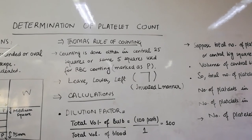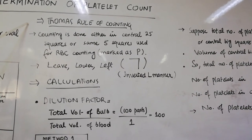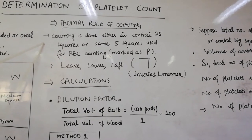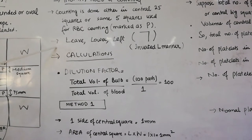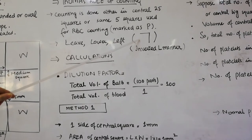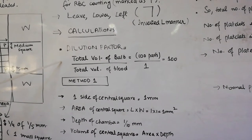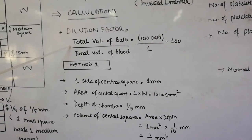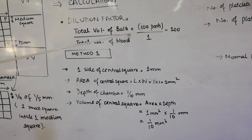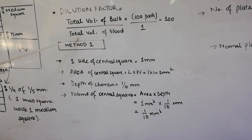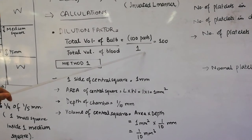Now we will discuss the rule of counting for platelet count. The Thomas rule of counting is also used here — you count the platelets in either the central 25 squares or the same 5 squares used for RBC counting marked P, in an inverted-L manner, leaving the lower left of the square. The dilution factor is calculated as total volume of bulb divided by total volume of blood taken. The total volume of the bulb is 100 parts and the volume of blood taken was 1 (up to the 1 mark), giving a dilution factor of 100.